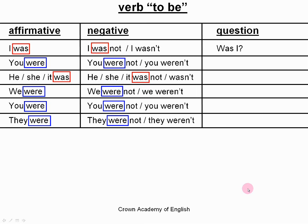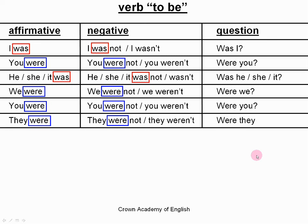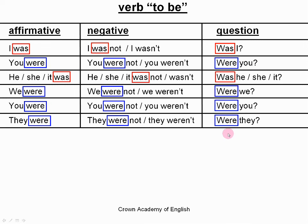The question form of verb 'to be': Was I? Were you? Was he, she, it? Were we? Were you? Were they? This is different from regular verbs — we do not say 'did'. For the verb 'to be', we simply reverse the order of the words. So 'I was' becomes 'was I', and 'you were' becomes 'were you'. You must learn all of these.